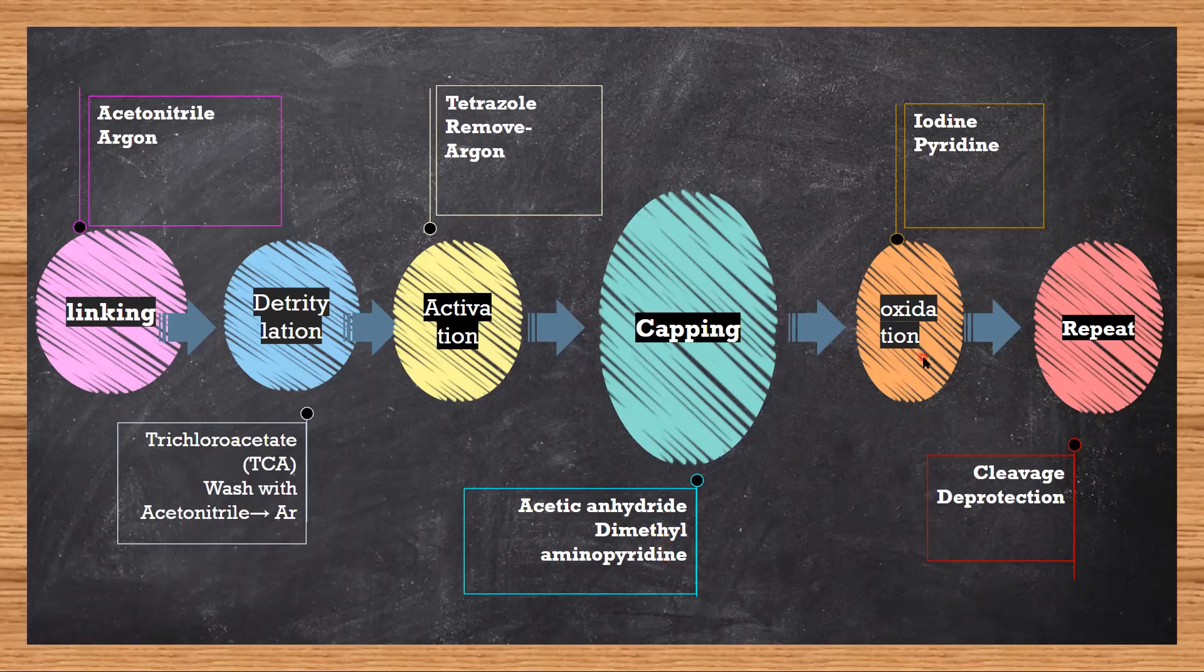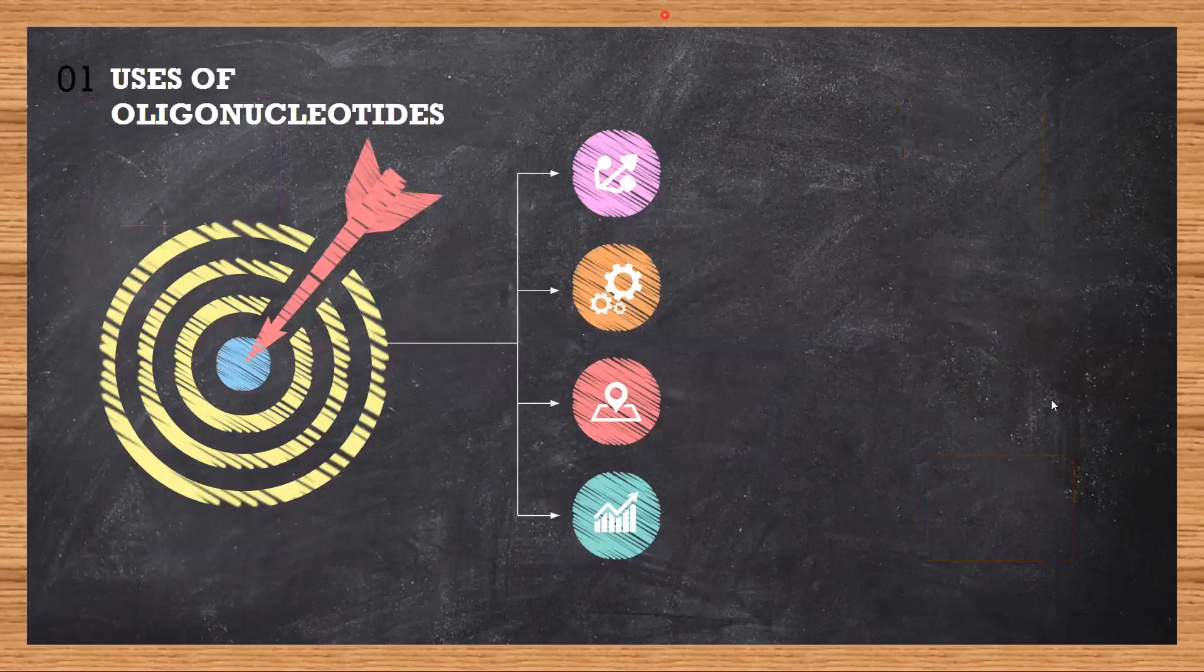Oxidation done by iodine and pyridine, and finally repeat. Once you are done making your nucleotide, you need to cause cleavage and deprotection. Cleavage meaning remove it from the support. The first nucleotide was added to the support, so that has to be removed, and we have to remove all the protecting groups. The last molecule that you had will still have DMT, you need to remove those.